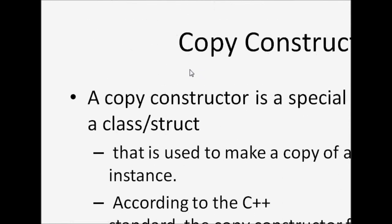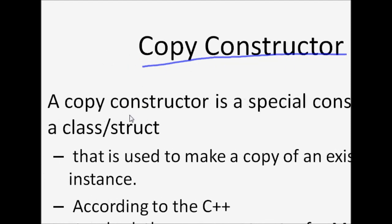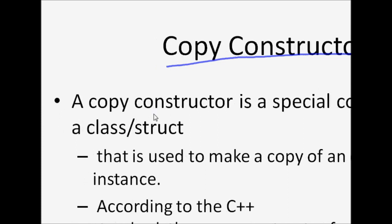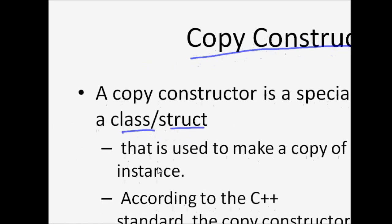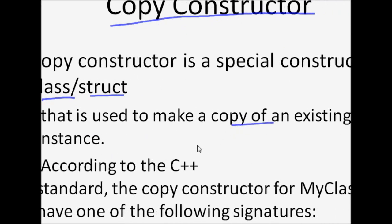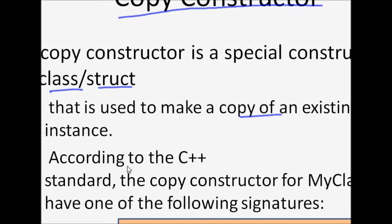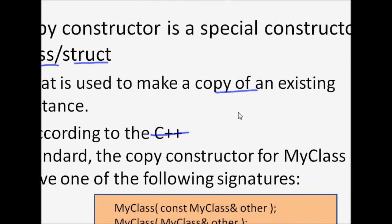In this lecture we are going to learn about what is known as a copy constructor. A copy constructor is a kind of advanced feature of C++ class — it is a special constructor for a class or structure, and it is used to make a copy of an existing instance of a class. C++ provides you one easy method: it provides you the copy constructor.